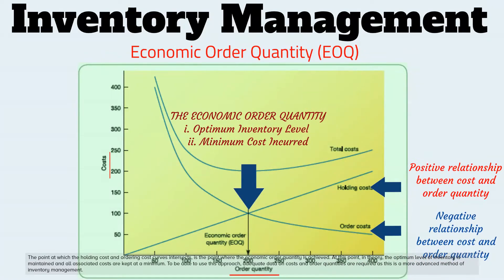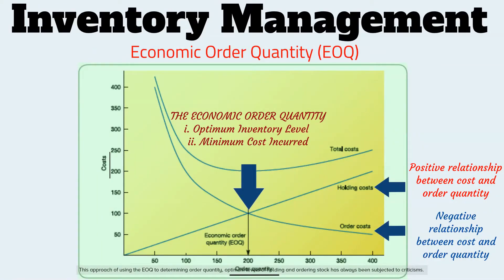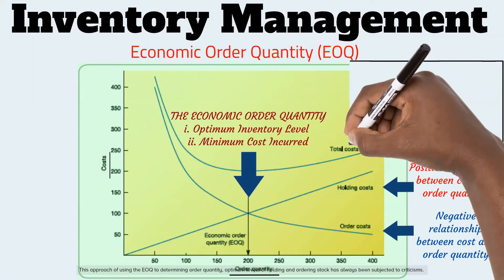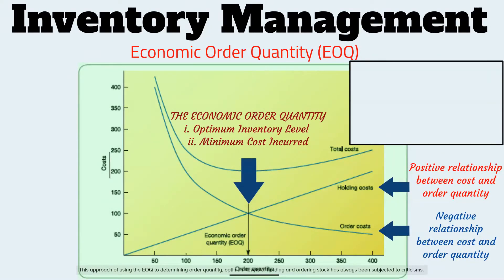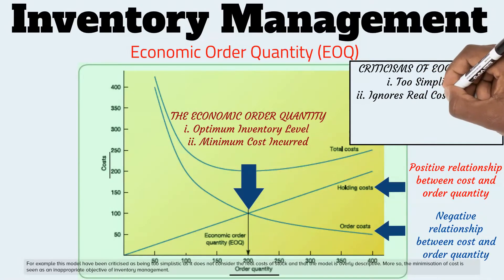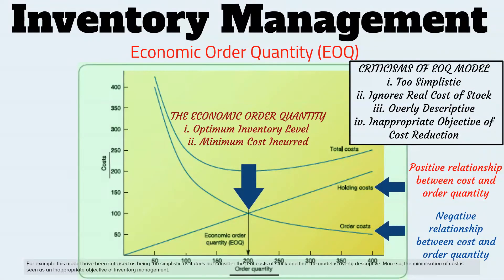To be able to use this approach, adequate data on costs and order quantities are required, as this is a more advanced method of inventory management. This approach of using the EOQ to determine order quantity and optimum levels of holding and ordering stock has always been subjected to criticisms. For example, this model has been criticized as being too simplistic, as it does not consider the real costs of stock and is overly descriptive. Furthermore, the minimization of cost is seen as an inappropriate objective of inventory management.